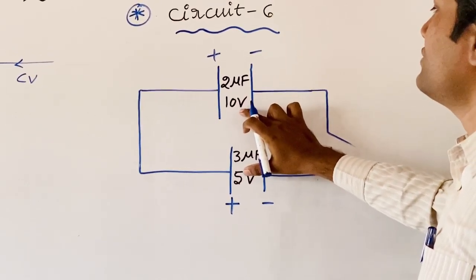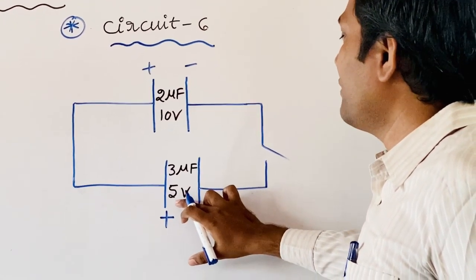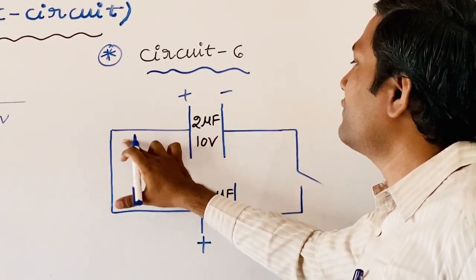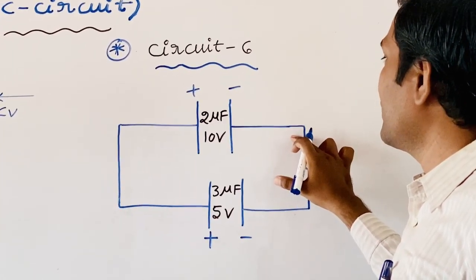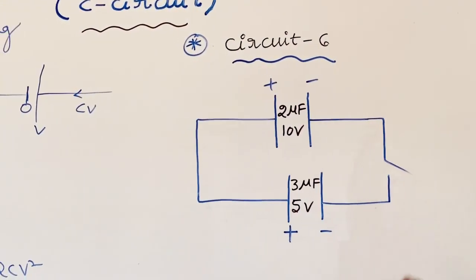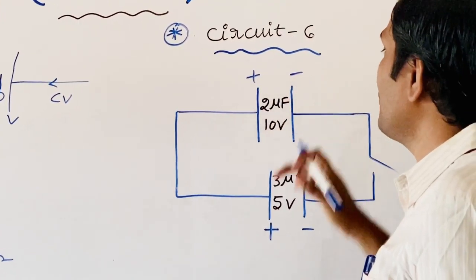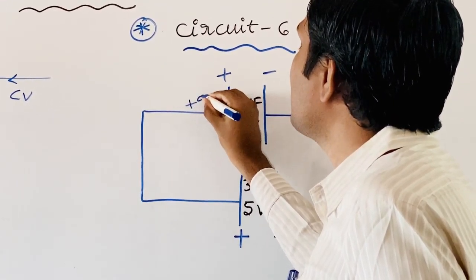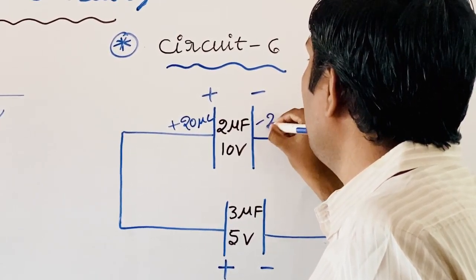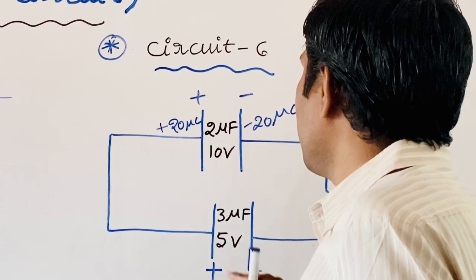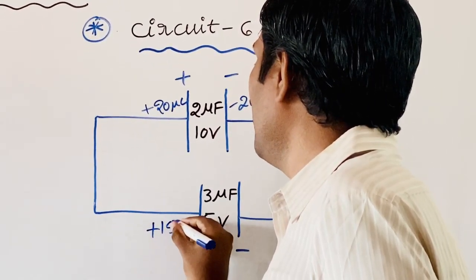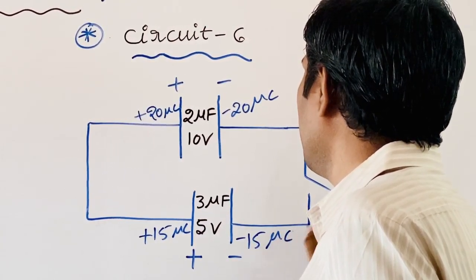The positive plate of one capacitor is connected to the positive plate of the other, and the negative plate is connected to the negative plate, after closing the switch. Before closing the switch: the first capacitor (2μF at 10V) has charge +20μC and −20μC; the second capacitor (3μF at 5V) has charge +15μC and −15μC.